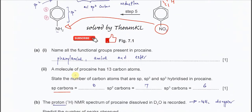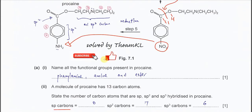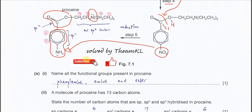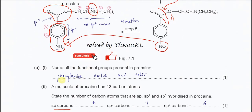Part A1: name all the functional groups present in procaine. The first functional group is phenylamine. The second is ester, and the third is amine — because the nitrogen is bonded to three alkyl groups. So the functional groups are phenylamine, amine, and ester.